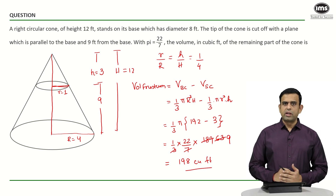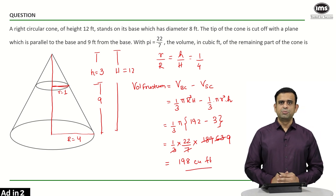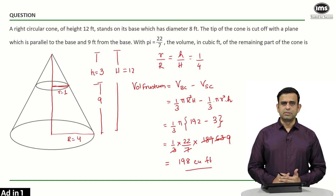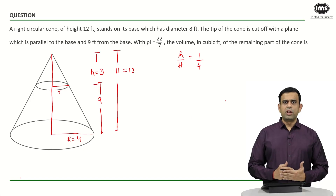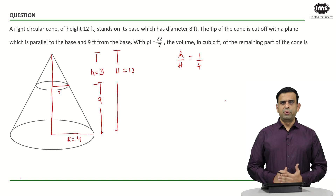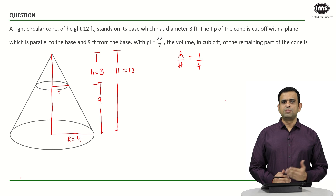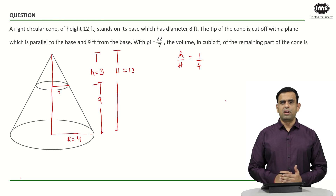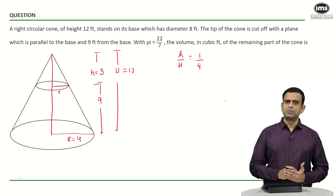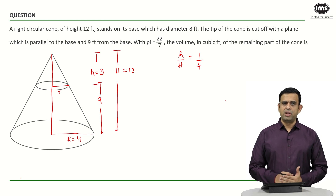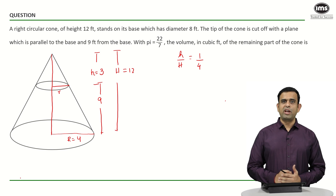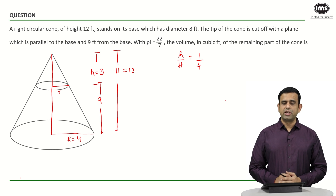So 198 cubic feet is the answer for this question. Now let us look at one more way to solve it using the concept of similarity. The two triangles are similar and small r upon capital R equals small h upon capital H, which is 3 by 12 or 1 by 4.